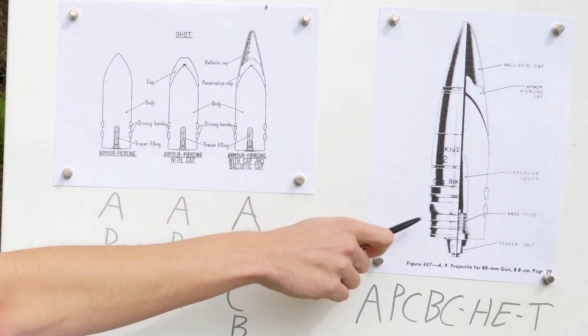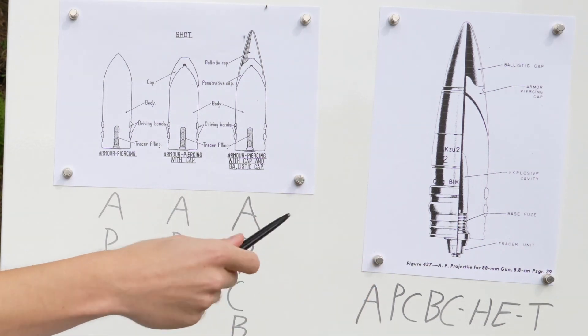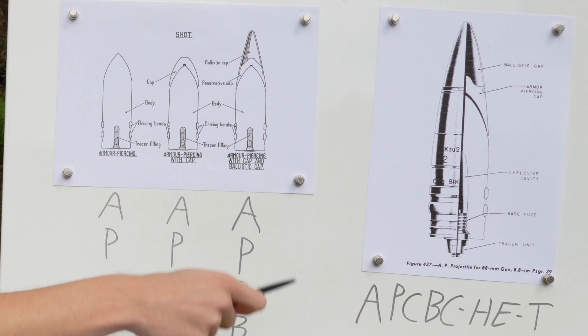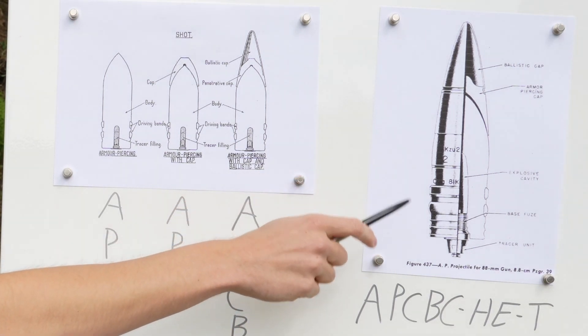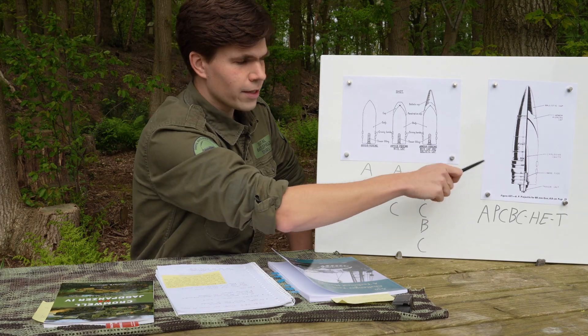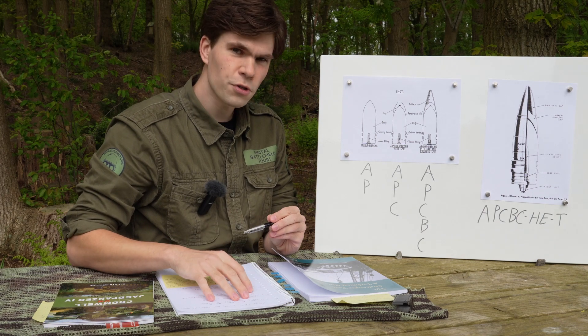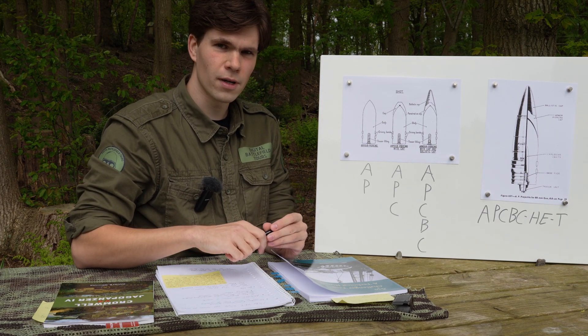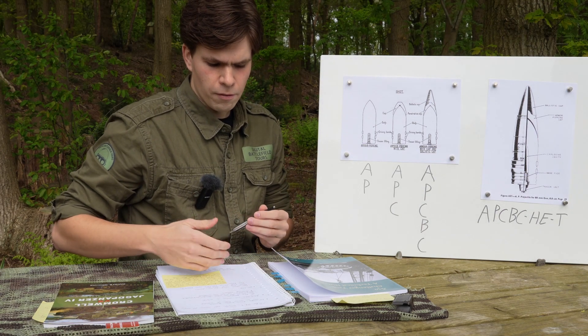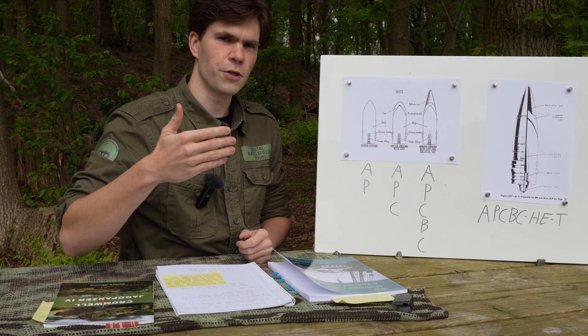Specifically the improved longer barreled anti-tank version that you see on the King Tiger and the Jagdpanther - easily one of the best anti-tank guns of the war. And here you see the armor piercing round, an APCBC HE T, and this had explosive filler.